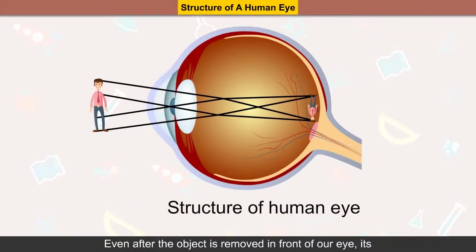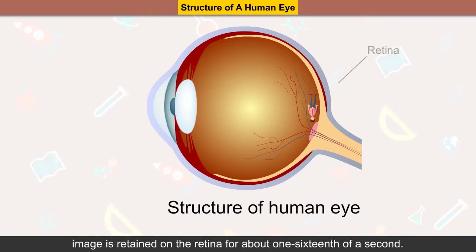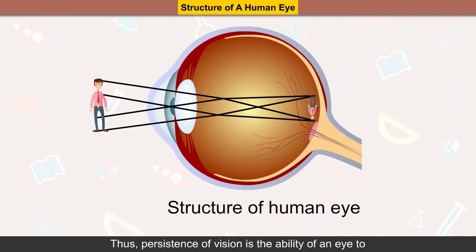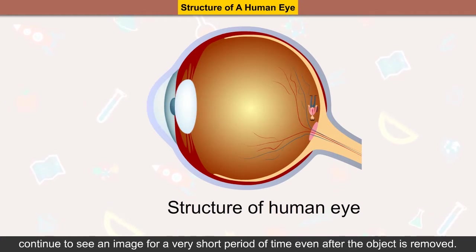Persistence of vision: even after an object is removed from in front of our eye, its image is retained on the retina for about 1/16th of a second. This is called persistence of vision — the ability of the eye to continue to see an image for a very short period of time even after the object is removed.